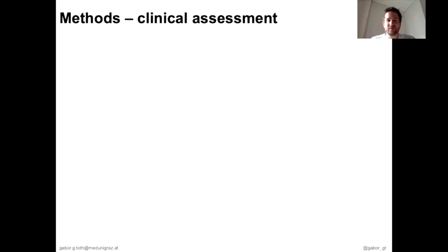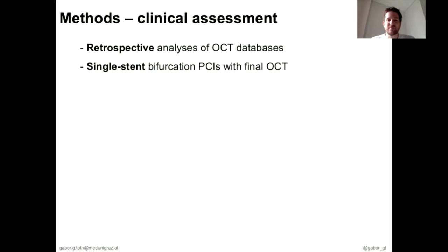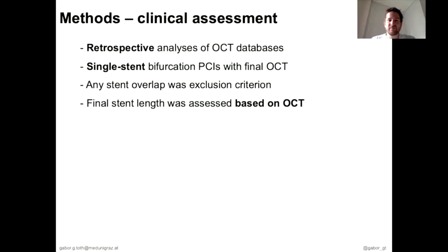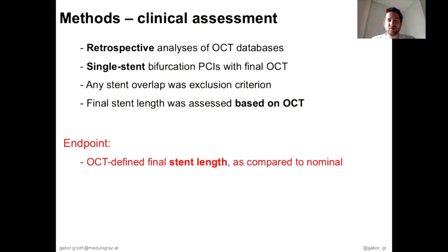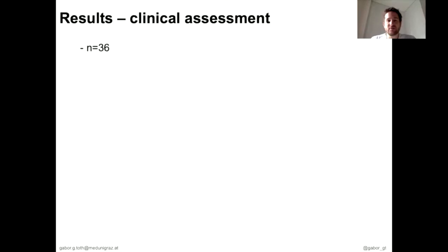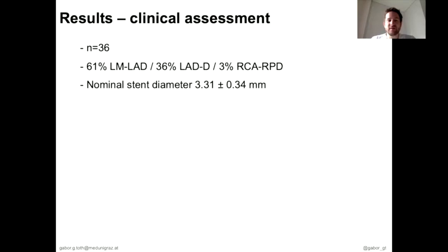With these bench findings, we also wanted to understand whether this is just a bench finding or has real clinical relevance. We went back to our OCT databases, collecting single stent bifurcation PCI cases done under OCT guidance. We excluded cases with stent overlap and those where stent length visualization was insufficient. In total, we had 36 cases, mainly in left main or LAD-diagonal bifurcations, with a nominal stent diameter of 3.3mm, post-dilated on average with plus one millimetre.